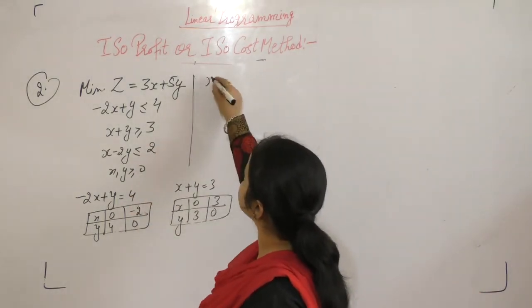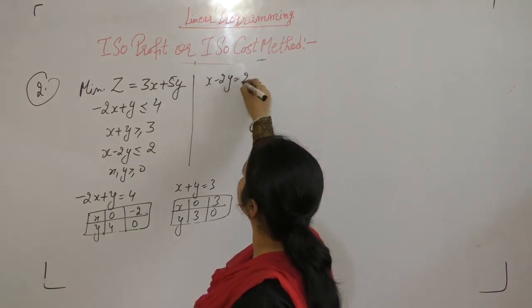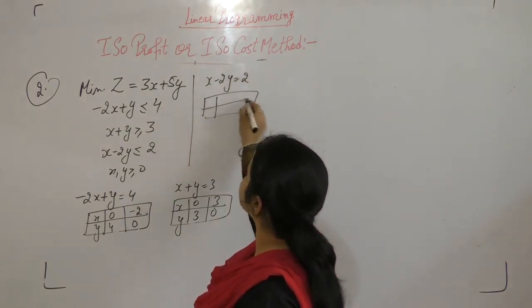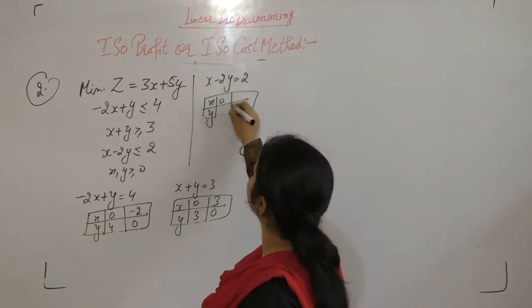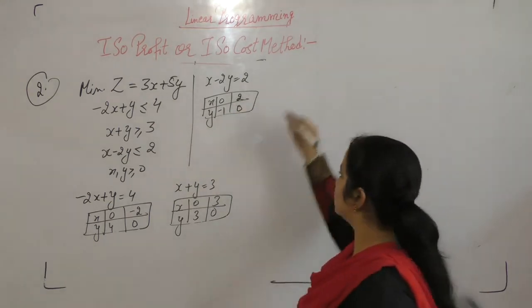Next equation is x minus 2y equals 2. When x is 0, y is minus 1. When y is 0, x is 2.